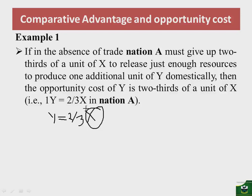For example, if these were mangoes and bananas, the opportunity cost of mangoes would equal 2/3 units of bananas. Always measure opportunity cost in terms of the commodity that is foregone. Now, if 1Y equals 2X in nation B, then the opportunity cost of Y is lower in nation A than in nation B.